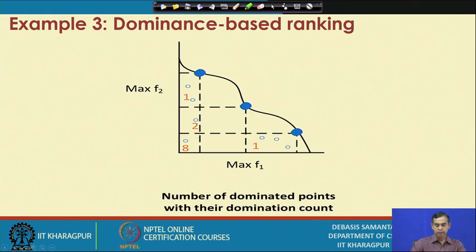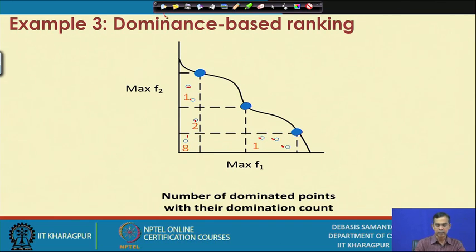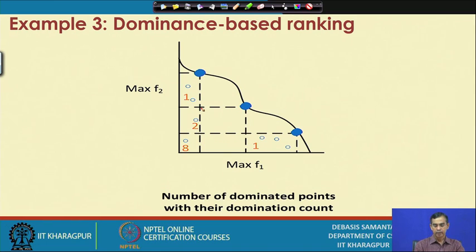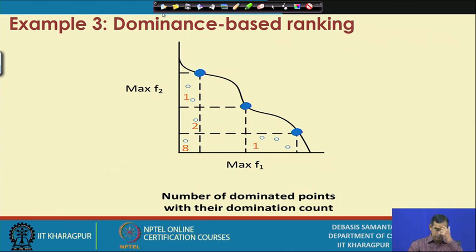Another example: for a maximization problem, rank of solutions on the first front are all 1, since they are dominated by no one or only one. Solutions further from the front get progressively higher ranks. Rank can be calculated by counting all dominating solutions and adding 1. This is the idea of ordering all solutions based on ranking. The physical interpretation of rank is a domination count — a higher rank means a solution is inferior, dominated by more solutions.